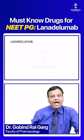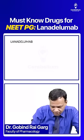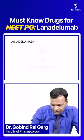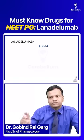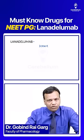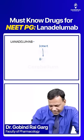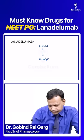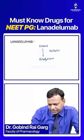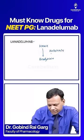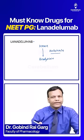The next drug is lanadalumab. Before going to this drug, we will try to understand a compound known as high molecular weight kininogen. It is metabolized to form bradykinin. This is done by a compound in the body known as calicrine. So calicrine is the compound which converts high molecular weight kininogen to bradykinin.